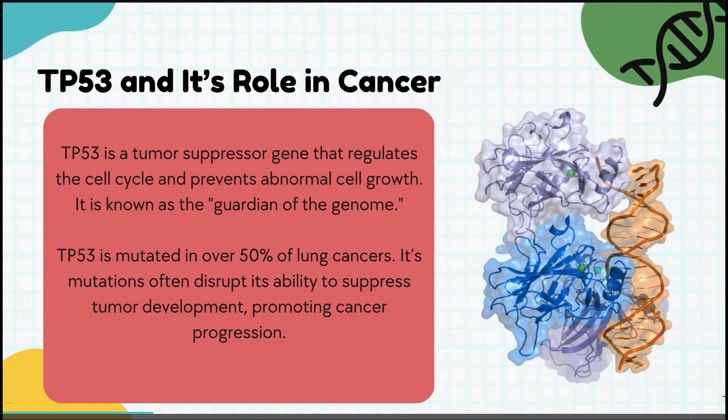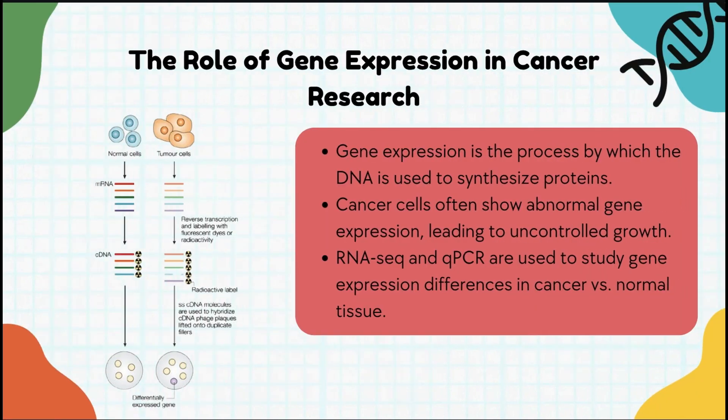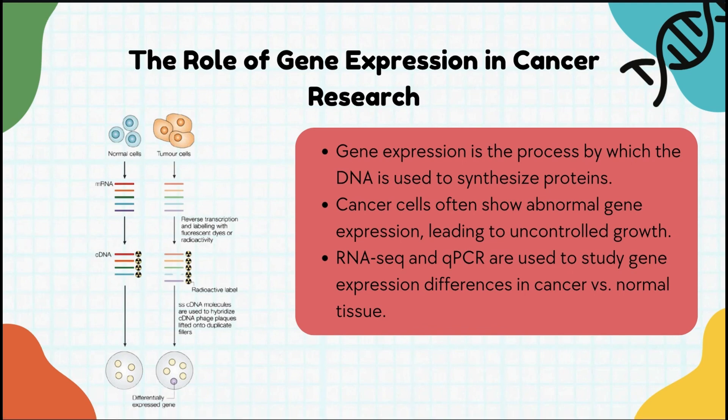That sounds like a lot of fun! But first, let's set the stage with a bit of background on the TP53 gene and its role in cancer. TP53, often called the guardian of the genome, plays a crucial role in maintaining genetic stability. When cells experience DNA damage, TP53 jumps in to stop the cell cycle, repair the damage, or if necessary trigger cell death. However, in cancer this process is often disrupted — mutations in TP53 or altered expression levels can disable this defense mechanism, allowing cells to grow uncontrollably.